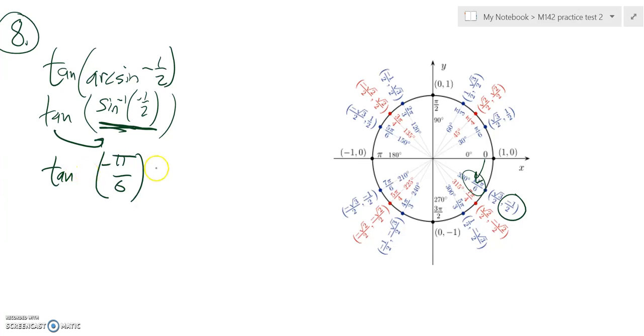And I want the tangent of that angle, so the tangent of right here. So tangent is y over x, so it's negative one-half over root 3 over 2.